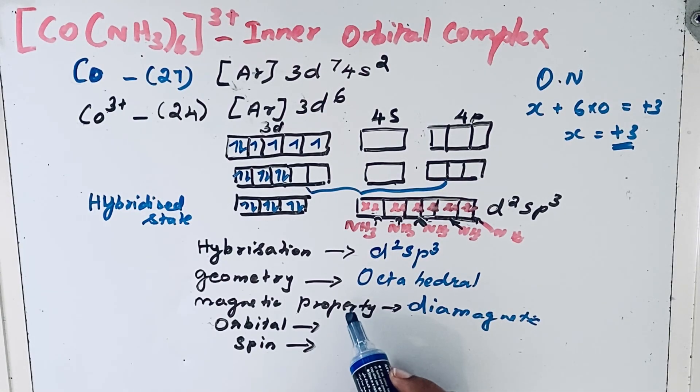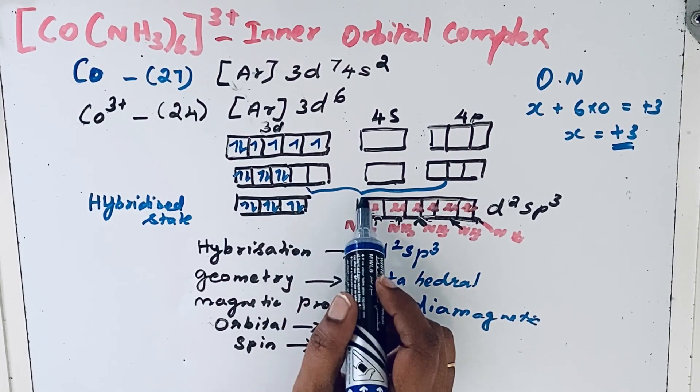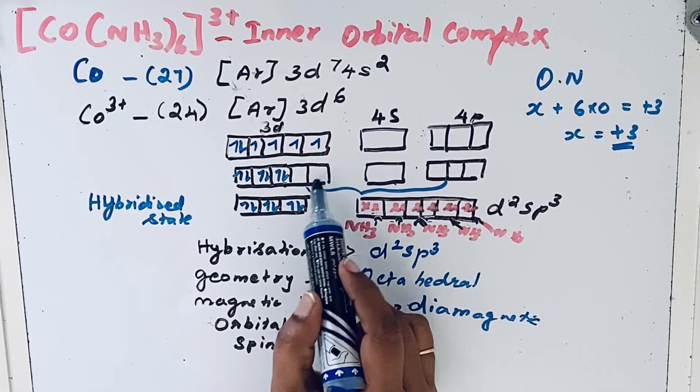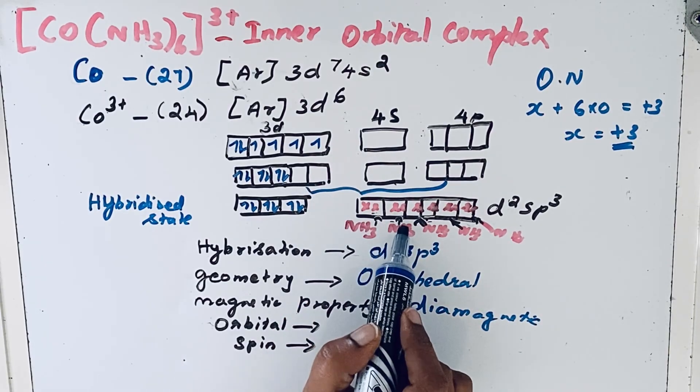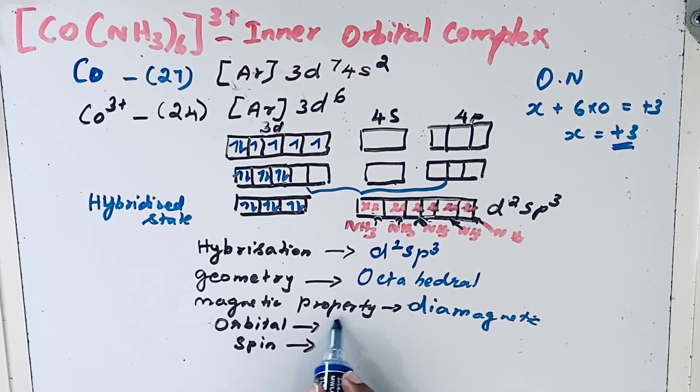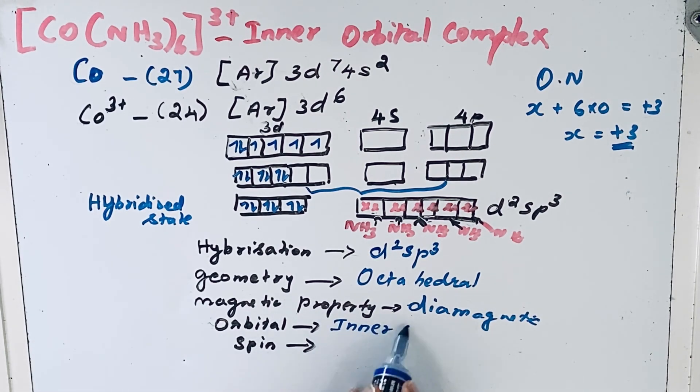For the orbital type: is it inner orbital complex or outer orbital complex? This is an inner orbital complex because the 3d electrons are involved in hybridization.